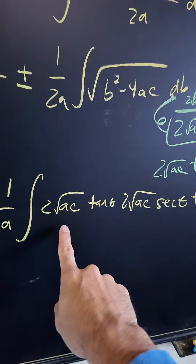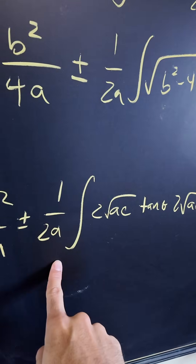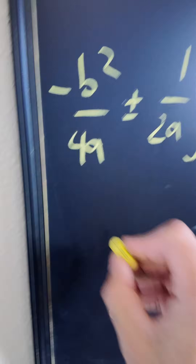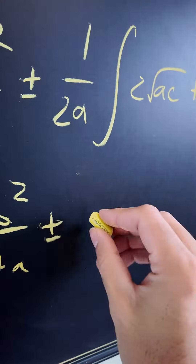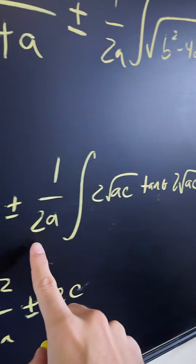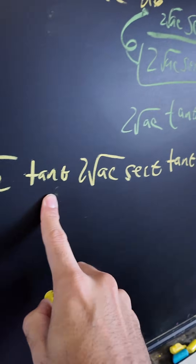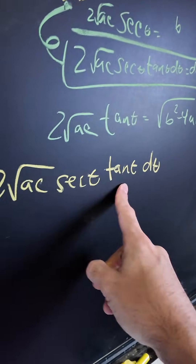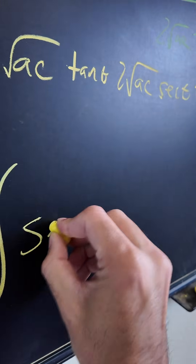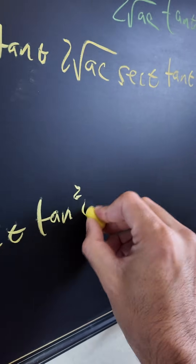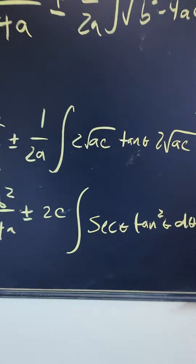Multiplying the two 2 root AC terms gives 4AC, which then cancels with the 2 and the A from the 1 over 2A out front, leaving us with C times the integral. So we have negative B squared over 4A plus or minus 2C times the integral of secant theta · tan squared theta · dθ. We just have to find the trig identity that helps us solve this.